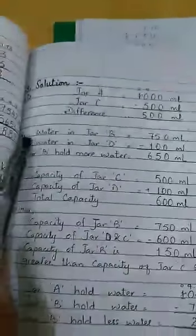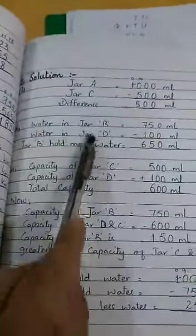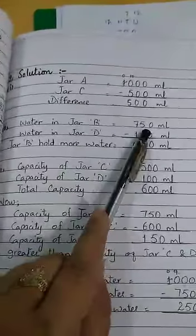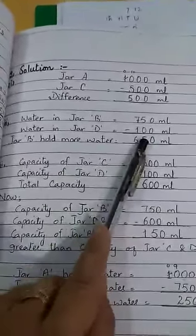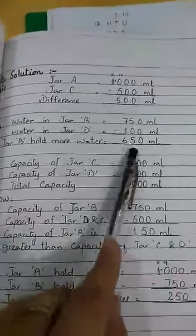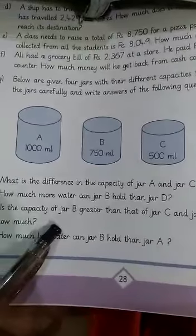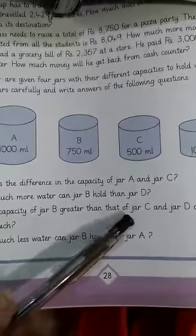Next, you have to subtract B's value minus D's value. Jar B holds more water: that is 650 ml. Number C: Is the capacity of jar B greater than the combined amount of jar C and D together?